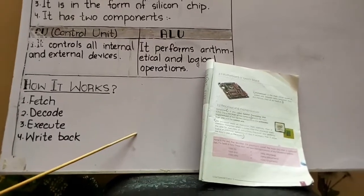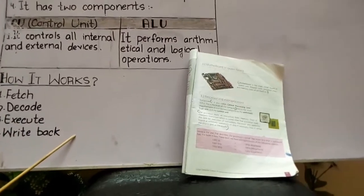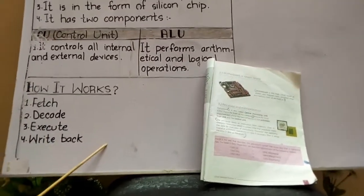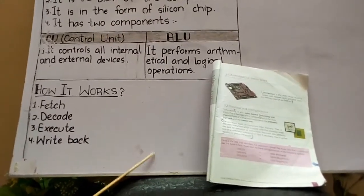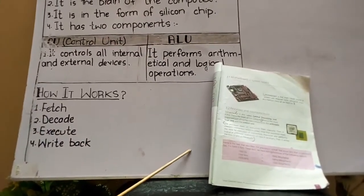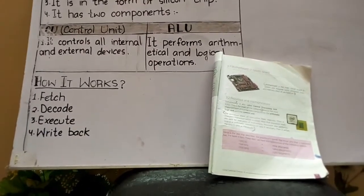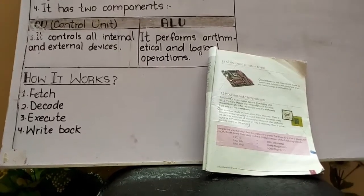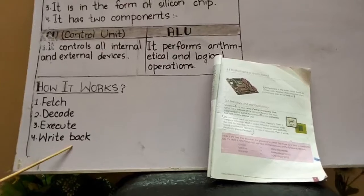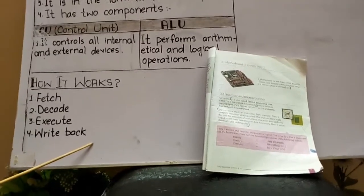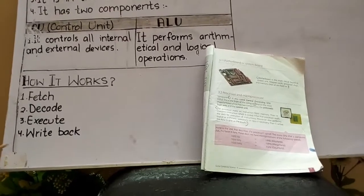And then, it will provide you the result. What is write-back? Write-back is very simple. In write-back, the processor will move to new instructions. Suppose you gave the computer instruction: five plus two equals seven. It gave you the result. After showing the result, you give the computer some new instructions, like two plus three. It will give you that result. In write-back, it follows new instructions. So the processor follows these four steps to perform its function.